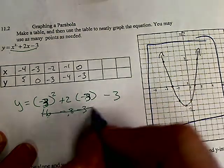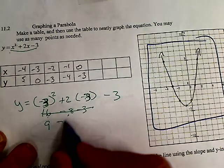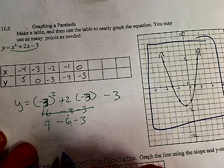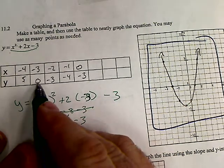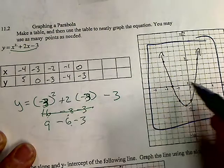Negative 3 times negative 3 is 9, minus 6, minus 3. 9 minus 9 is 0. That's where the 0 came from. I did it for all these x's and got all these y's. Plot all the points and you have your parabola.